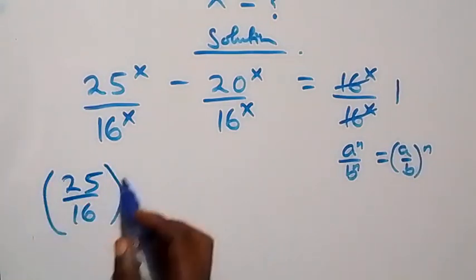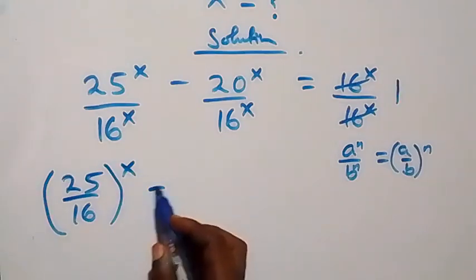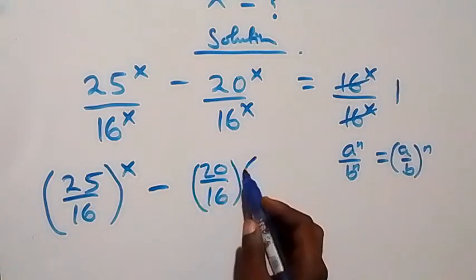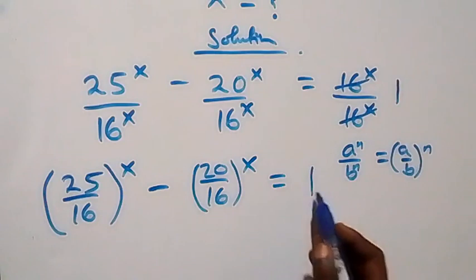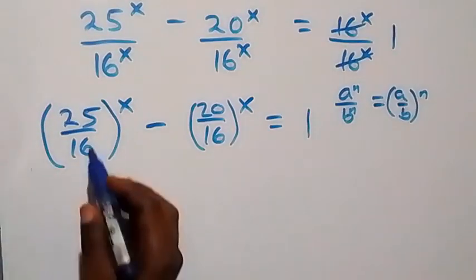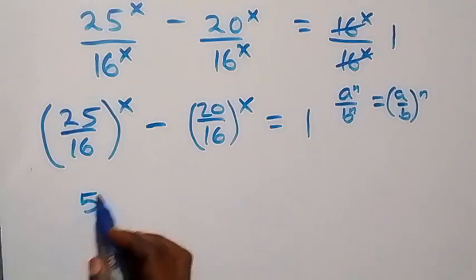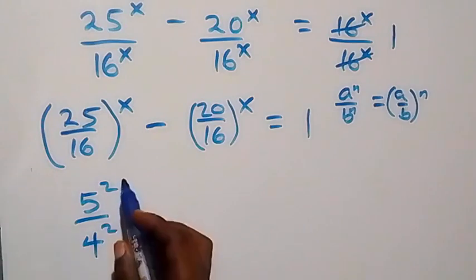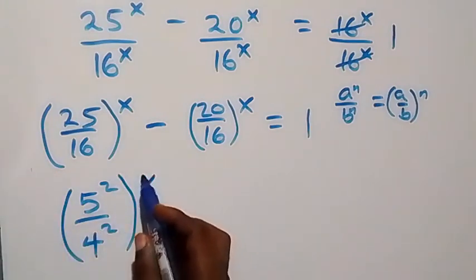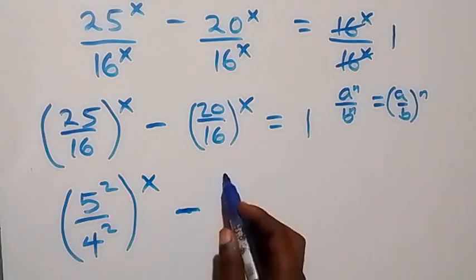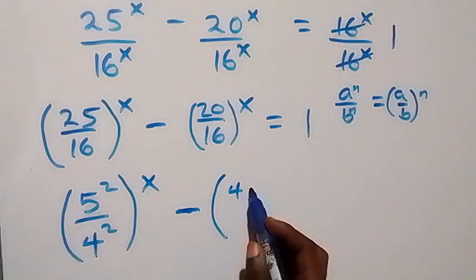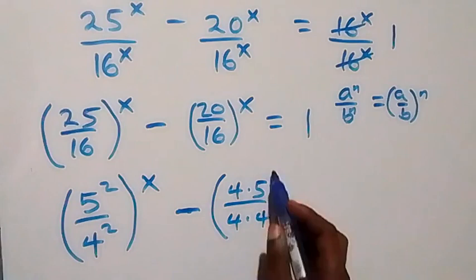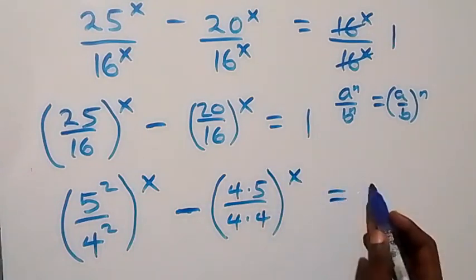We can write this as (25/16) raised to power x minus (20/16) raised to power x equals 1. Now, 25 is 5 squared and 16 is 4 squared, and 20 can be written as 4 times 5, while 16 is 4 times 4. So this becomes (5²/4²)^x minus (4×5/4×4)^x equals 1.